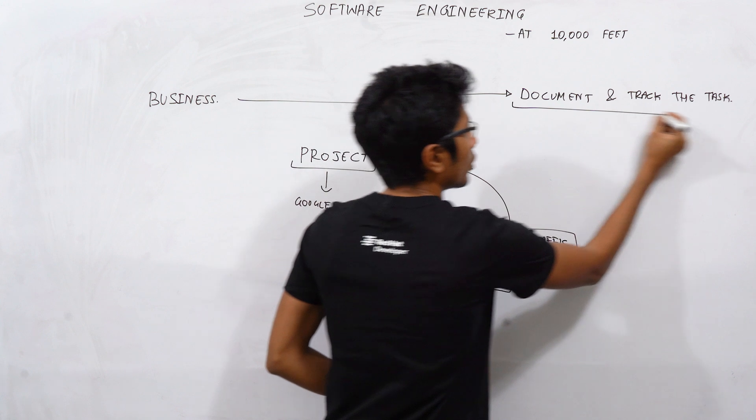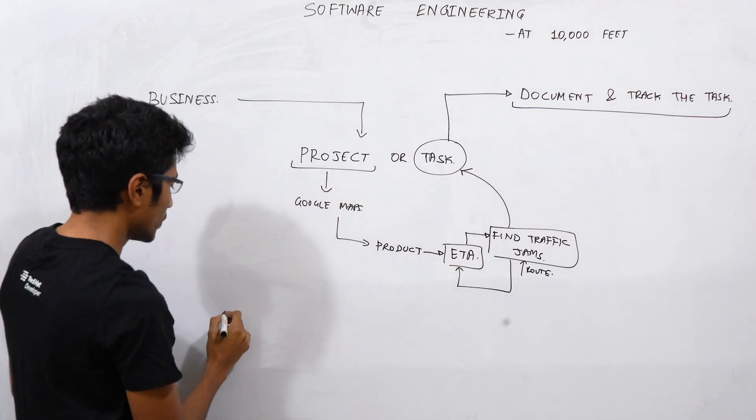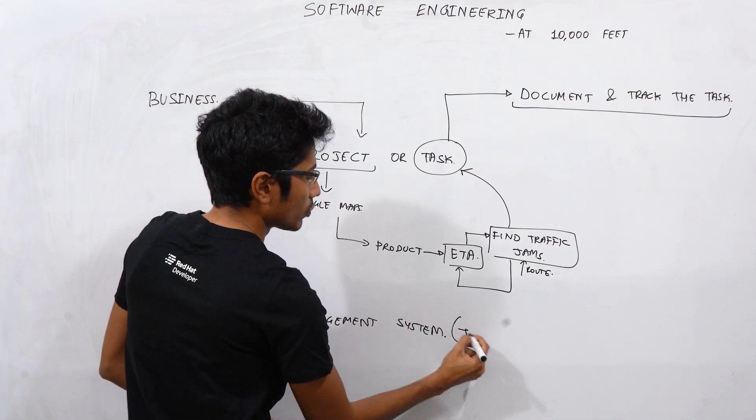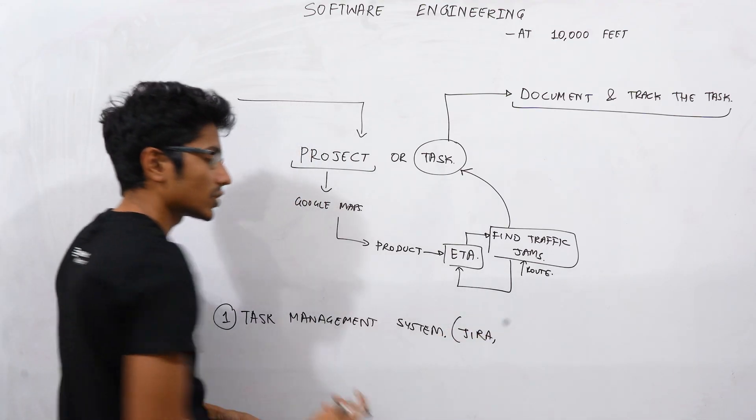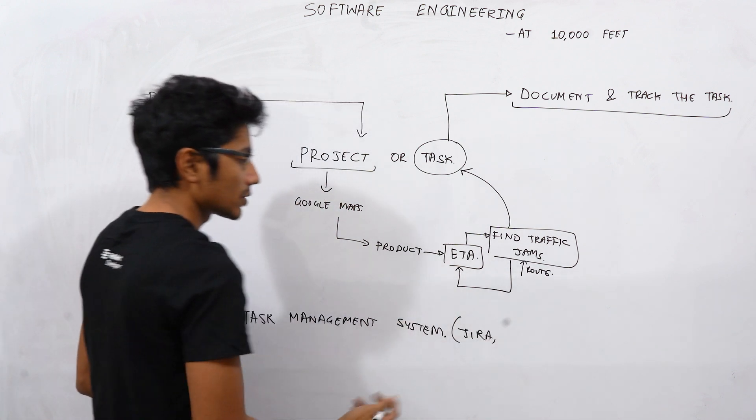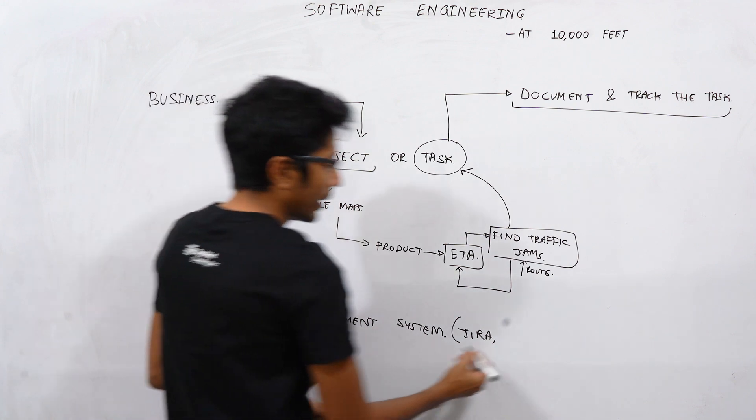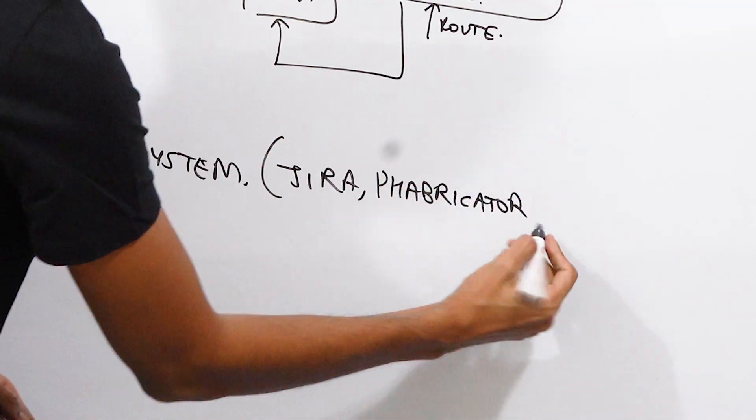So for this you need some sort of process or tool and this brings us to the first tool which is task management system. An example of this would be Jira. Some organizations have their own task management systems or they write on top of this but Jira is extremely popular when it comes to software engineering. You might have Phabricator and so on.